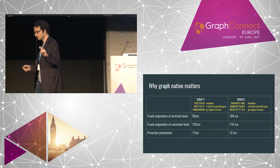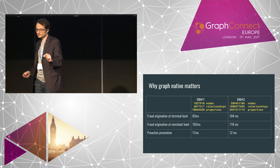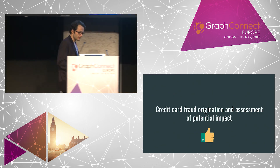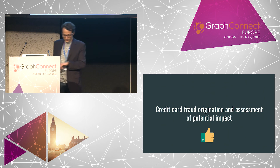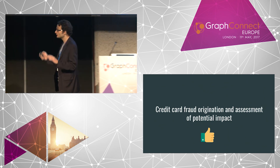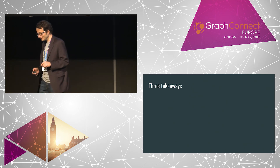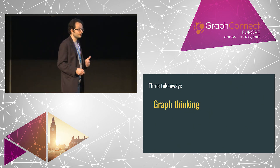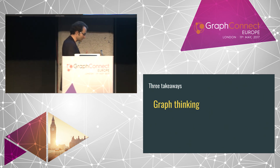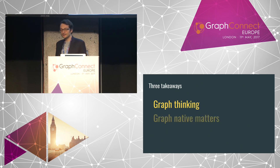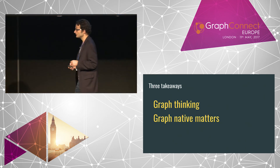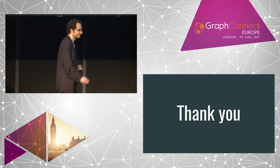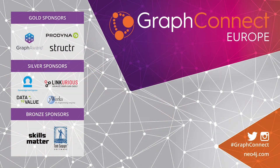This kind of analysis can be run in real time, and reacting as soon as possible to these problems obviously saves money. So the second idea is graph native: predictability in performance and incredible speed. To wrap up — three things to take away: graph thinking, look at your problem with a different mindset and try to find the graph in it; graph native, remember that it matters; and third — just have fun. Enjoy the rest of the day, and thanks for your attention.